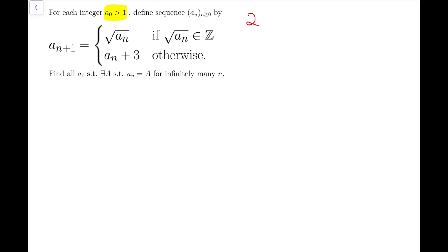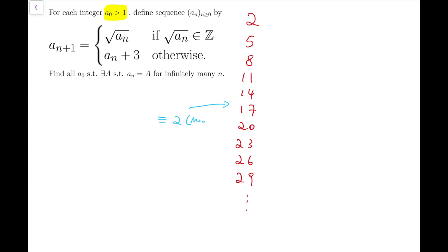The first term is 2, then because it's not a perfect square, the square root might not be an integer, so I can only add it by 3. Again it's not a perfect square, so I'll just keep adding. In fact, this sequence will just go on forever, keep adding the last term by 3, because all these terms follow one simple pattern: they are congruent to 2 mod 3, meaning when divided by 3, they have remainder 2.